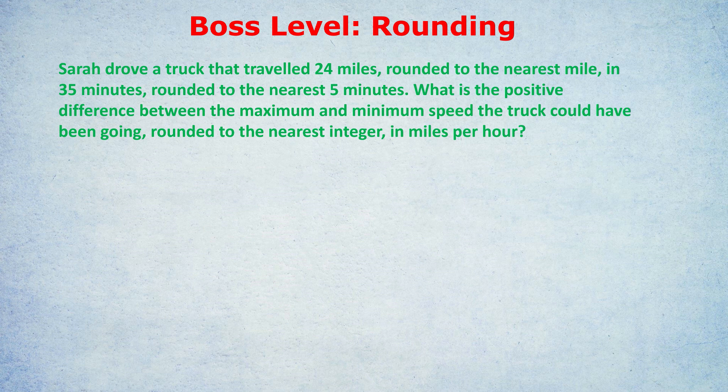She traveled 24 miles rounded to the nearest mile. Many of you would say it's between 23.5 and 24.5. For those still unsure: it says rounded to the nearest mile, which is the same as rounded to the nearest one mile. One divided by two is 0.5. Add 0.5 to 24 and we get 24.5 as the upper bound. Take away 0.5 from 24 and we get 23.5 as the lower bound.